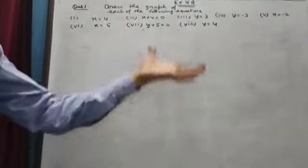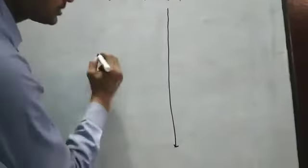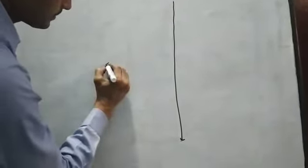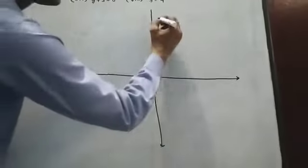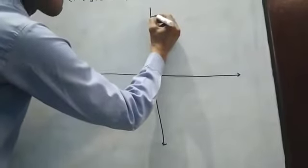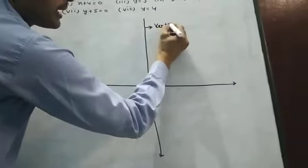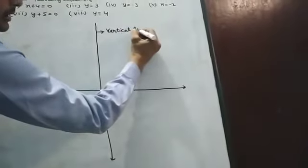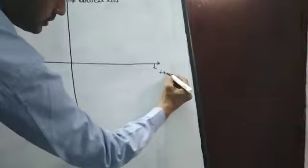So now firstly, students, we draw a Cartesian plane. This line, students, is called vertical line. This, students, horizontal line.